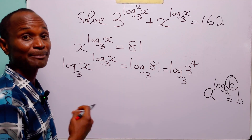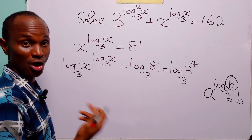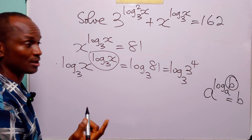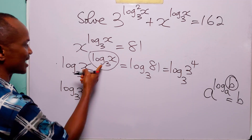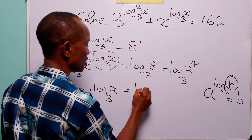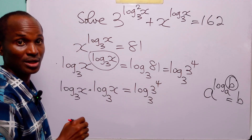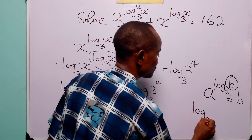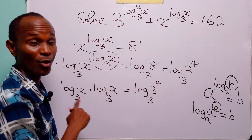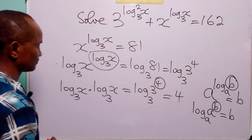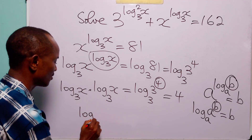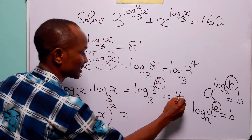Now we apply the power rule of logarithms to the left hand side — we bring down the exponent to the front as a multiplier. This gives log to base 3 of x, multiplied by log to base 3 of x, equal to log to base 3 of 3 to the fourth power. Since log to base a of a to the power b equals b, log to base 3 of 3 to the power 4 is simply 4. So we have log to base 3 of x, squared, equal to 4.